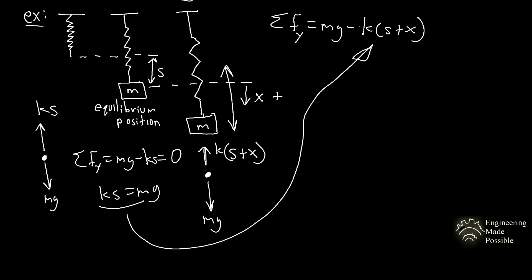When you distribute that k, you have the s, and you're able to simplify it. So once you distribute, you see that your weight cancels off, and then you're left with negative kx. And this is equal to the mass of the system times your rate of change, your second derivative, rate of change of displacement with respect to time.